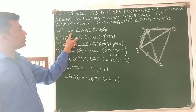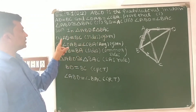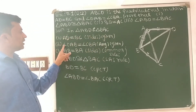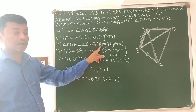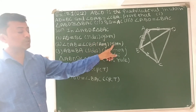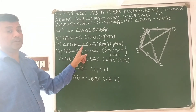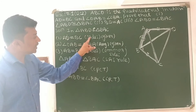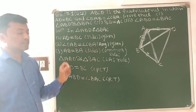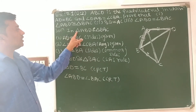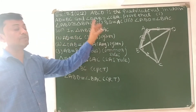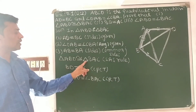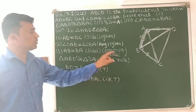So, in both triangles ABD and BAC: AD is equal to BC (sides, given); angle DAB is equal to angle CBA (angles, given); AB is equal to BA (sides, common side). Side-Angle-Side, S-A-S. According to the S-A-S criterion rule, triangle ABD and triangle BAC are both congruent to each other. So we can write triangle ABD is congruent to triangle BAC according to the S-A-S rule.